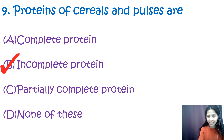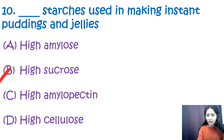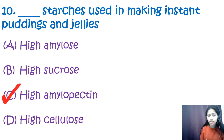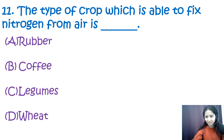Question 10: Which starch is used in making instant jellies and puddings? Options are high amylose, high sucrose, high amylopectin, and high cellulose. The correct option is C — high amylopectin. Amylopectin is a polysaccharide in starch that can gelatinize and form a thick, stable structure when mixed with water and heated, providing the stability and thickness needed for puddings and jellies.